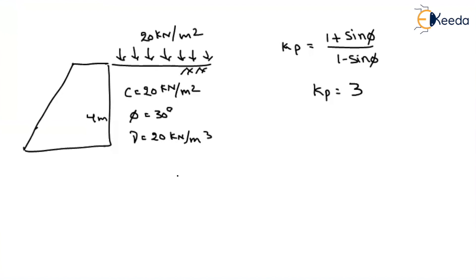Now, if it is passive earth pressure, the stress at any point Pp will be equal to Kp into sigma v plus 2 into C into under the root Kp.